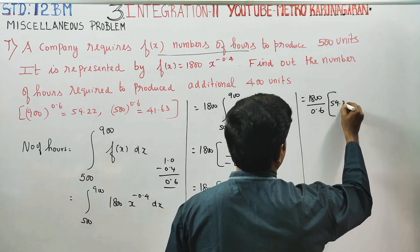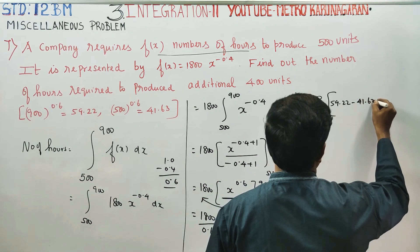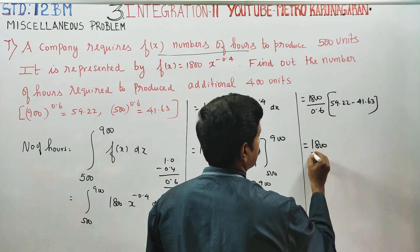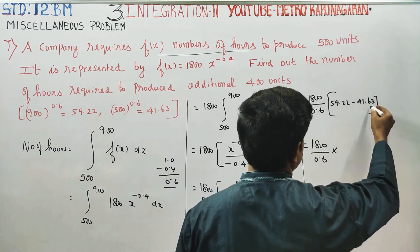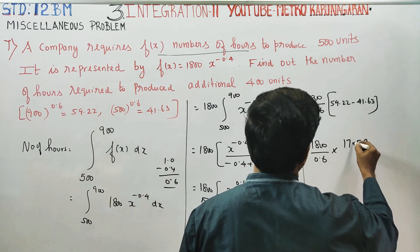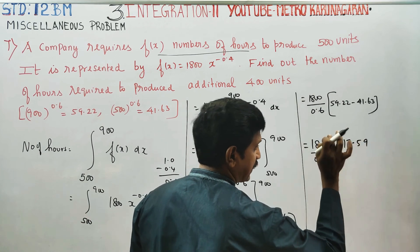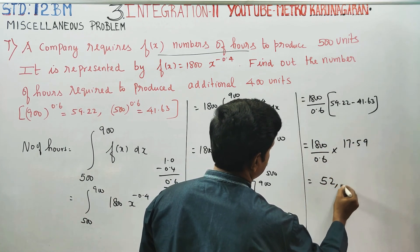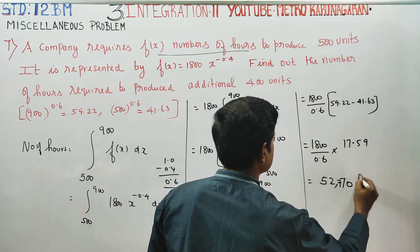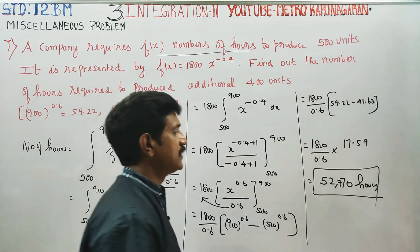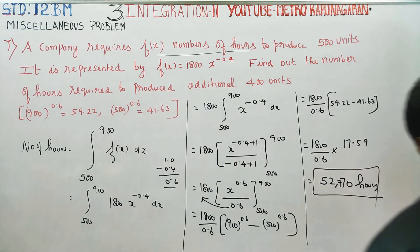900 to the power 0.6 equals 59.22, and 500 to the power 0.6 equals 41.63. So 1800 divided by 0.6 into the difference gives 52,770 hours. This is the final answer: 1800 into 17.59 divided by 0.6 equals 52,770 hours.